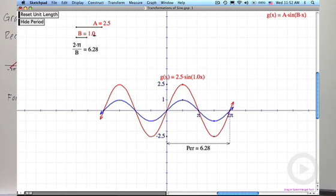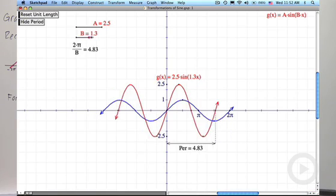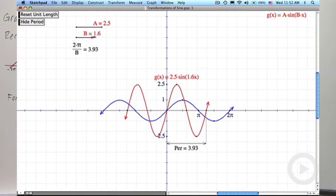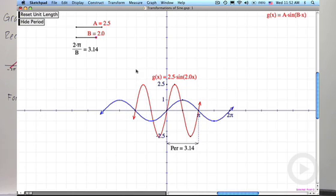Now what happens if I adjust the b value? Do I also get stretches and compressions? The answer is yes, but it's not the way you'd expect. When you increase b, you get a horizontal compression. For example, when b is 2, my period is exactly half of what it used to be. Now my period's π.